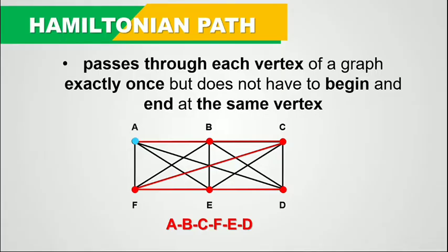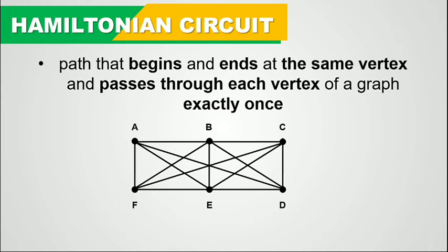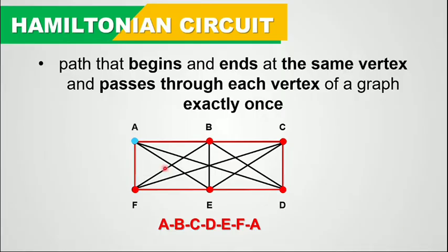When we talk about a Hamiltonian circuit, it is a path that begins and ends at the same vertex and passes through each vertex of a graph exactly once. For example, in this graph, if we start at vertex A and then go to B, to C, to D, to E, to F, and then go back to A — this is an example of a Hamiltonian circuit. We started at vertex A and ended at the same vertex A, and we passed through each vertex B, C, D, E, and F exactly once.